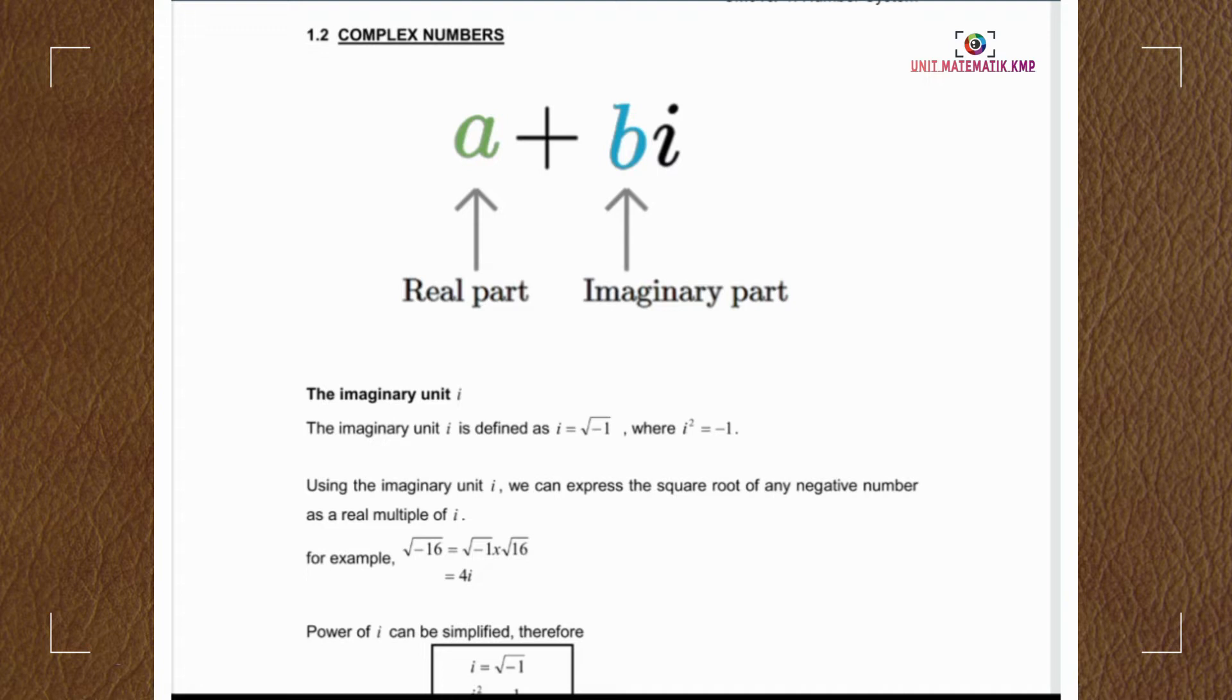The letter a represents the real part of the complex number, and the term bi represents the imaginary part of the complex number.